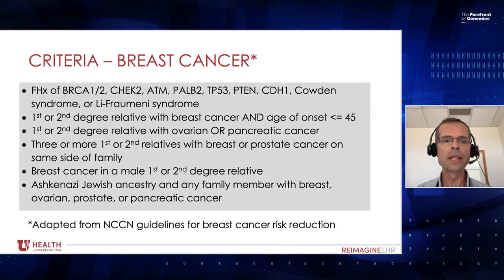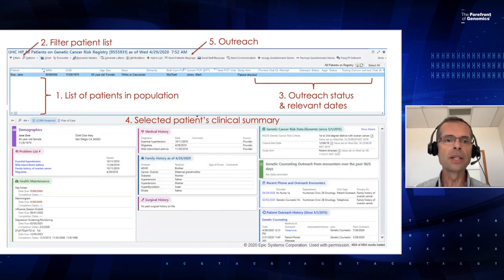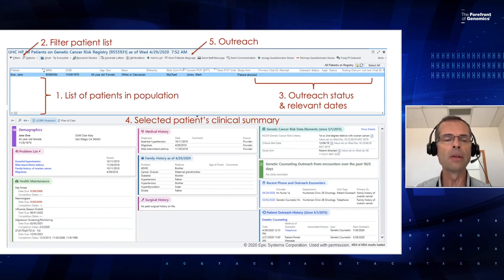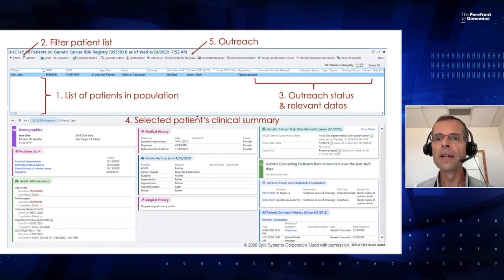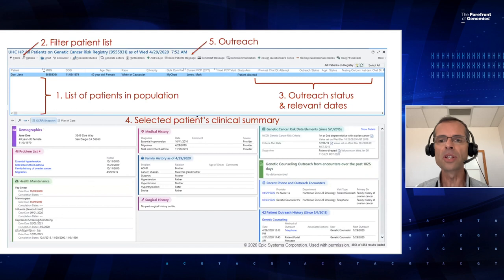The registry dashboard in Epic shows: a list of patients in the population; the ability to filter patients by any criteria—for example by clinic or specific provider; the ability to track outreach status—seeing which patients have not yet received an outreach message or which have responded; and a drill-down view where genetic counseling assistants can review data points relevant to the outreach and management process.